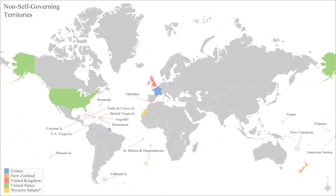Malta was a British protectorate and later a colony from the French Revolutionary Wars in 1800 to independence in 1964. Mozambique was a colony of Portugal since the 15th century, independent since 1975. The Philippines were previously a colony of Spain from around 1565 to 1898 as part of the Spanish East Indies, then a colony of the United States from 1898 to 1946, achieving self-governing Commonwealth status in 1935 and full independence in 1946.